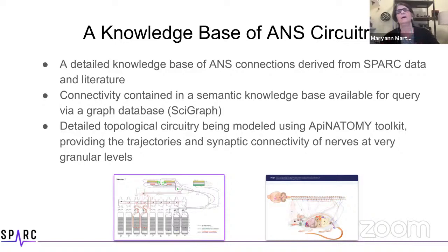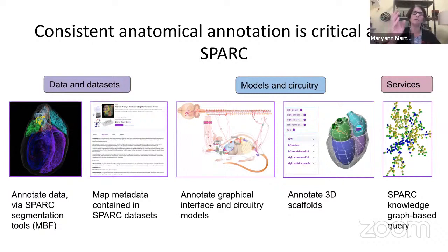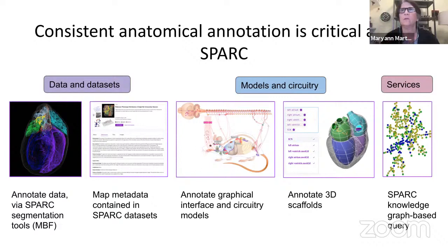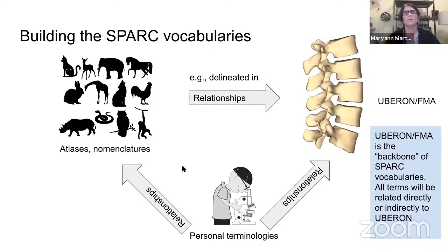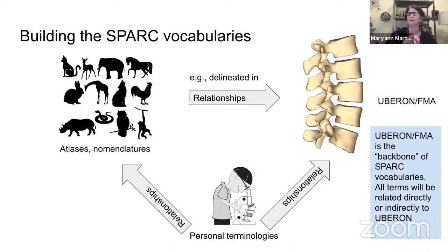Underlying these lines is a very sophisticated model that plots not only that structure A connects to structure B, but also the trajectory it takes — what nerve bundle it goes through, what anatomical structures it passes through — so that if you are placing electrodes, you get a sense of the local tissue environment. That information is being made available through a knowledge base of ANS circuitry using a very sophisticated model. We're creating a semantic knowledge base containing this information, though we're not yet up to our first release.